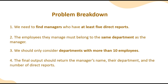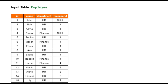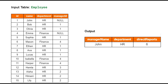Let's look at the structure of the input and output tables. The input table lists employees with their respective departments and manager IDs. The output table shows managers who have at least five direct reports within the same department, along with their department and a count of direct reports. In this example, the employee John manages six employees in the HR department.